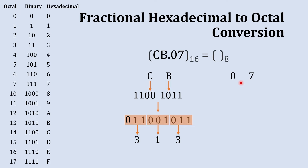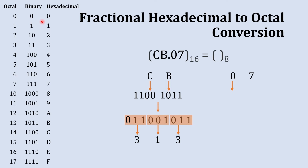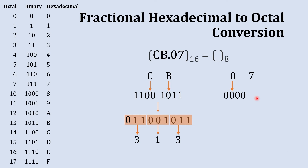Now for the fractional number part, .07. We start from the left with zero — the binary equivalent to hexadecimal 0 is 0000. The next digit is 7, and while the binary equivalent is 111, we use a four-digit representation: 0111. Combining these gives us 00000111.